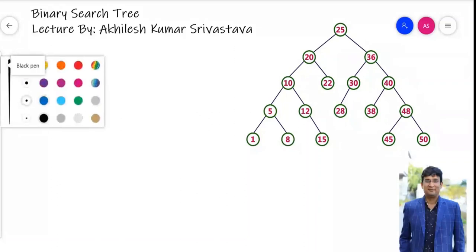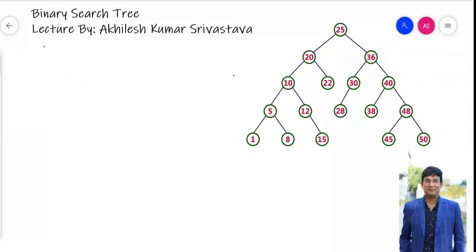Before finding the successor and the predecessor, we need the concept of finding the minimum and maximum in a binary search tree. The minimum means the node containing the minimum key value. It is clear that the minimum information can be found in the left subtree, and the leftmost element in the binary search tree will be the minimum element.